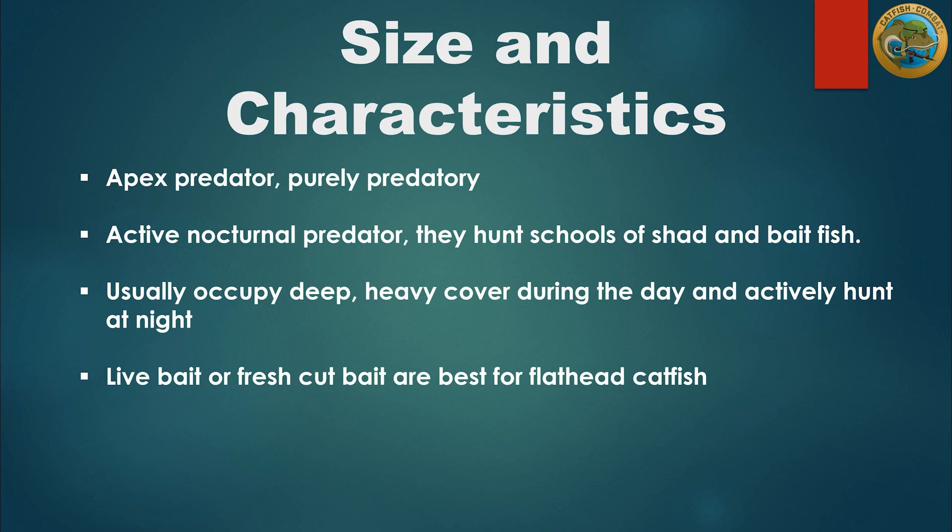The average flathead catfish that I see on the Tennessee River is about 15 to 20 pounds. A 30-plus pound fish could be considered to be a trophy-class flathead catfish. The current Alabama state record flathead catfish is 80 pounds and was caught in 1986 in the Alabama River near Selma. The current world record flathead catfish is 123 pounds and was caught in 1998 at Elk City Reservoir in Kansas. Live bait can give you an edge with flathead catfish, or at a minimum use fresh cut bait.